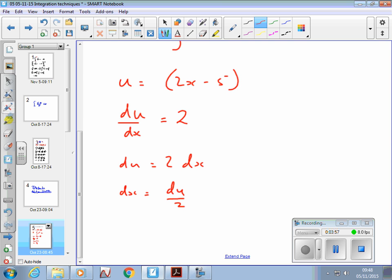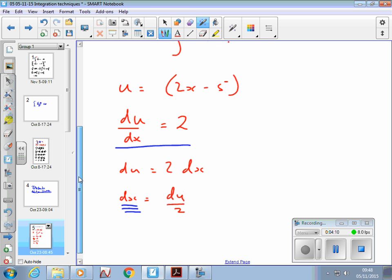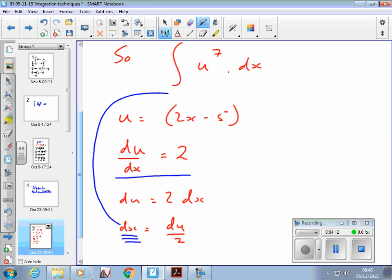So I treat it like an algebraic expression. I differentiate it to get du by dx equals 2, and then I rearrange for dx. Because what I want to do now is to put this value for dx in here and replace dx by that. So I replace dx by that, and I've now got this.